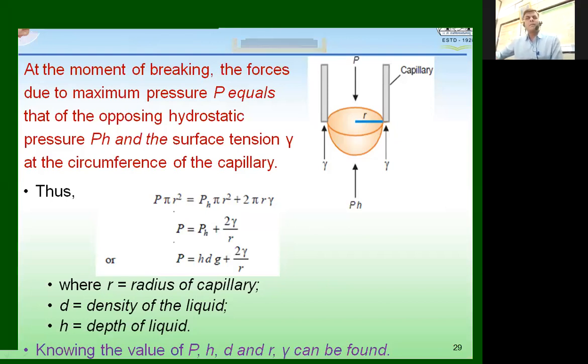The capillary tube was dipped into the liquid. So, what was the height? h. d is the density of the liquid which is under investigation. g is the acceleration due to gravity. So, knowing these values, we can determine the value of surface tension.